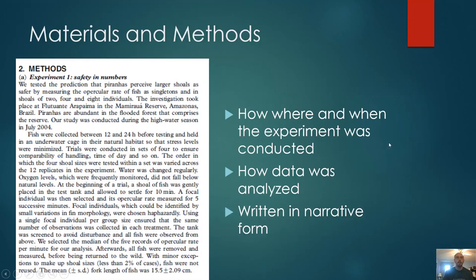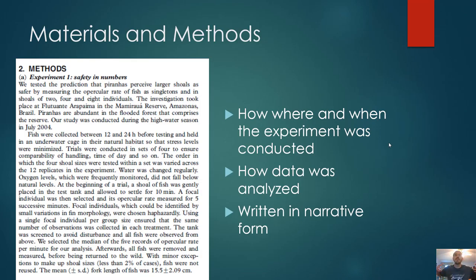Then there's the materials and methods section. This will be pretty short for Bio 1, but this covers how and where the experiment was conducted, and how data was analyzed. It's written in narrative form, not as a recipe. You tell them what was done, and you don't need to include trivial details — but you give enough general detail that someone could replicate your experiment.